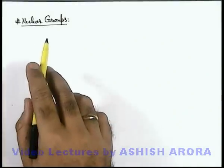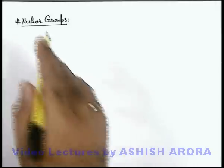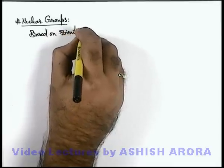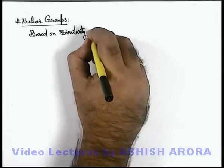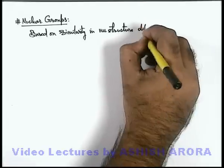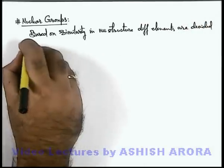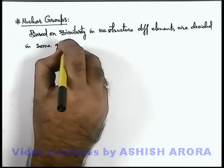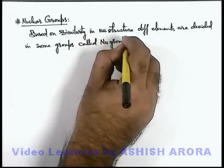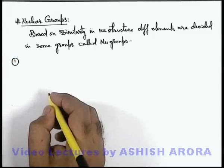Let us now study about nuclear groups. These are the groups in which all element nuclei are divided, which have some kind of similarities. Based on similarity in nuclear structure, different elements are divided into some groups, called nuclear groups. There are 4 different groups which are defined in standard fashion.